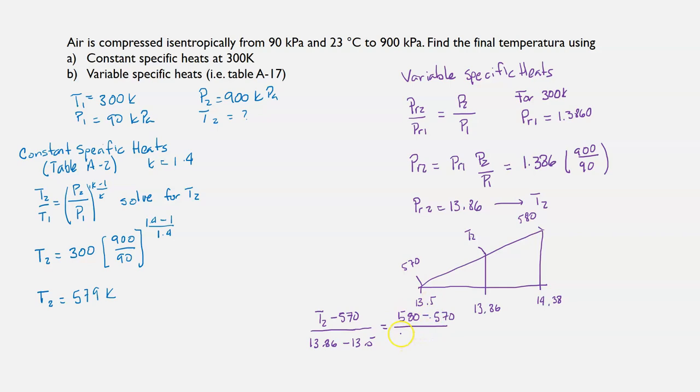So we have the same slope in this relation as in this relation. So that's the way of finding T2. You can also perform this interpolation in your calculator.